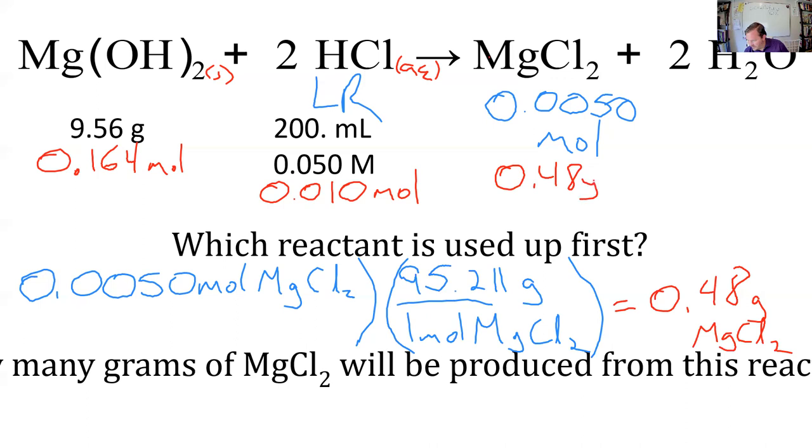And if I don't specify, if I just say, what's the theoretical yield? Then you can leave it in moles. But if I specify specific units, you just might have to do some conversions at the back end to finish up the question. But the big step is that getting to moles of whatever compound I'm asking about. And then you can do your molecular weight or whatever else you need to.